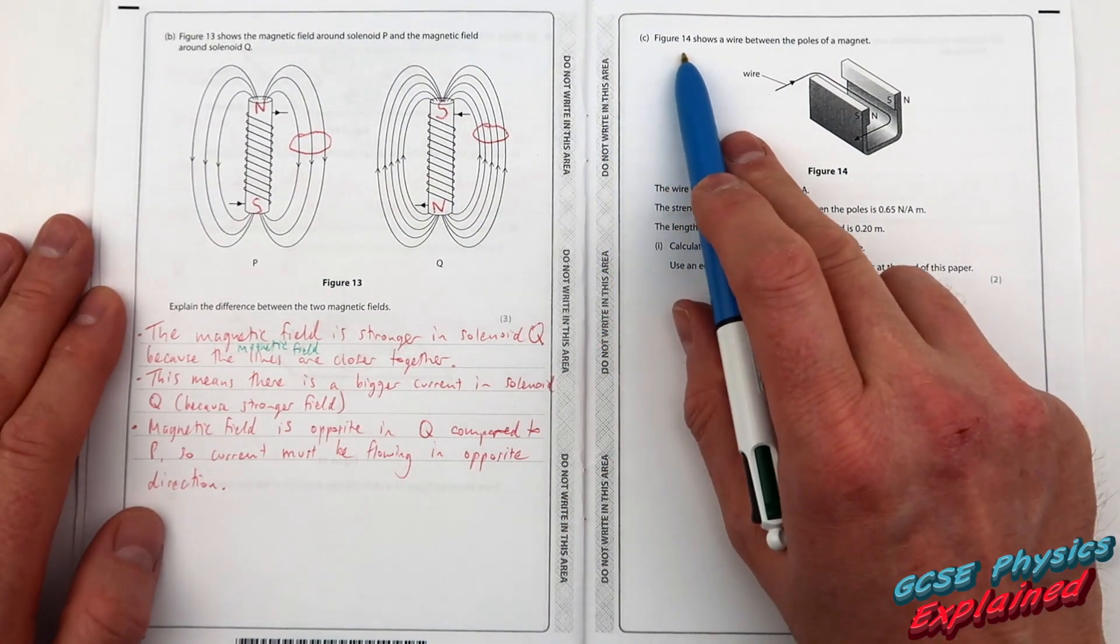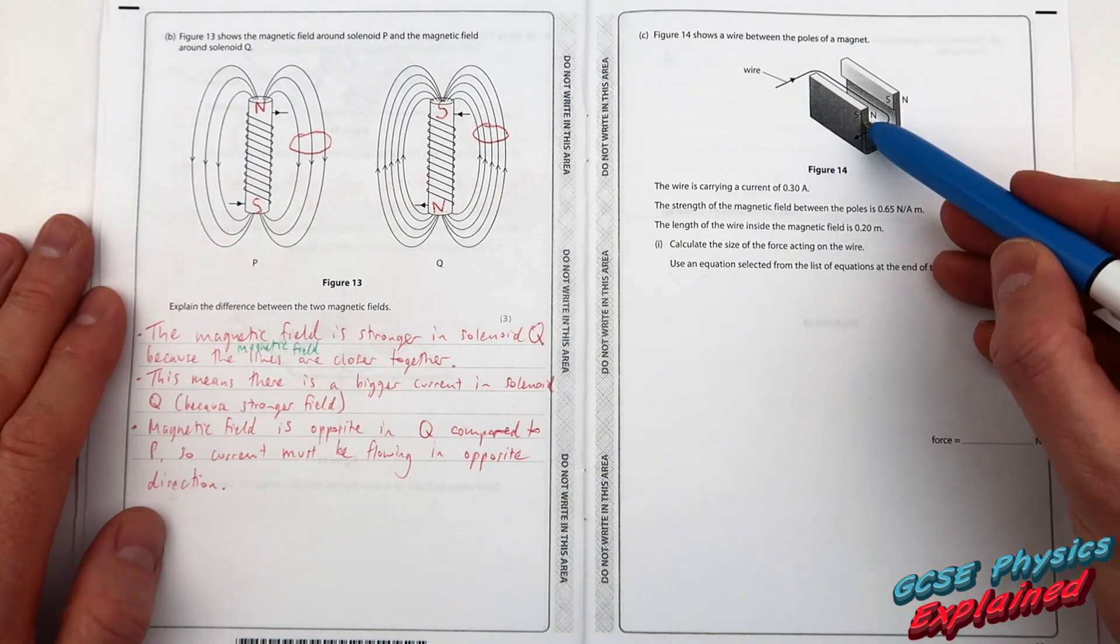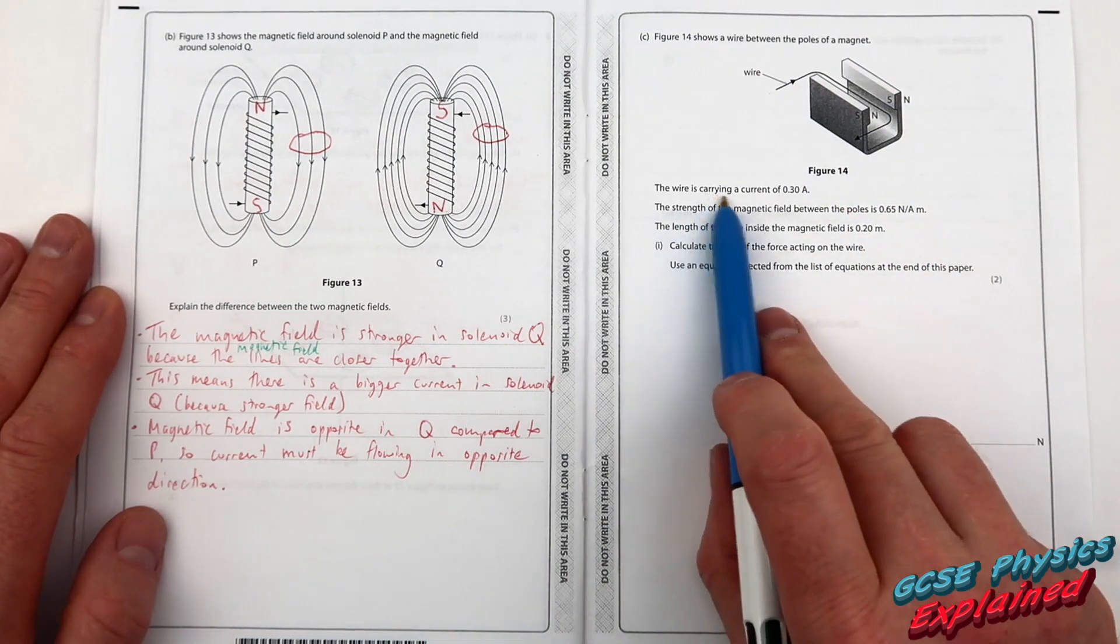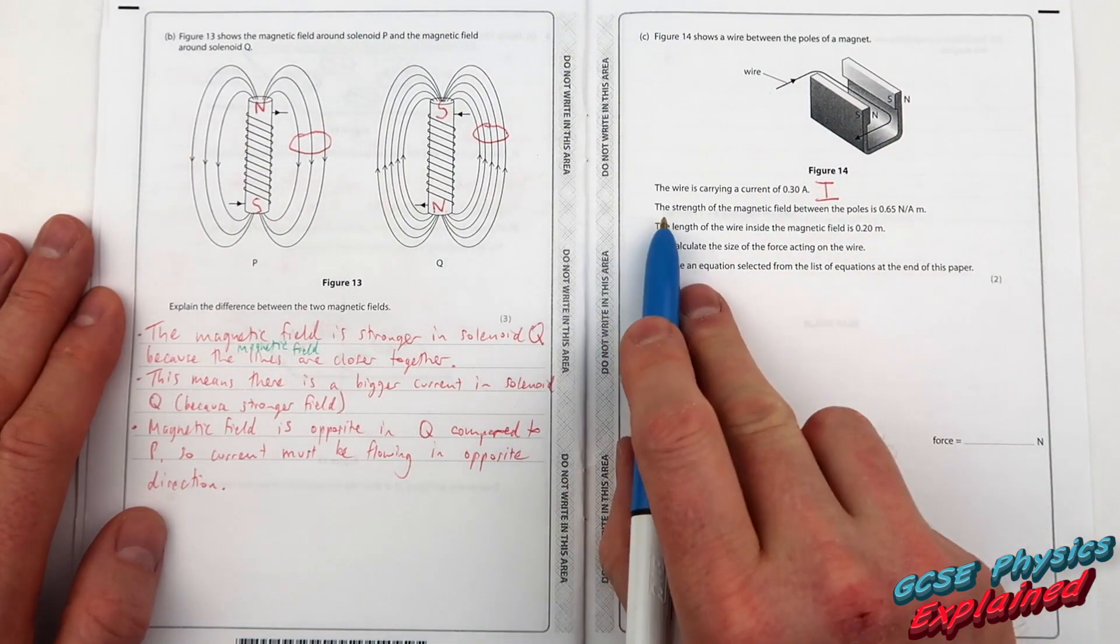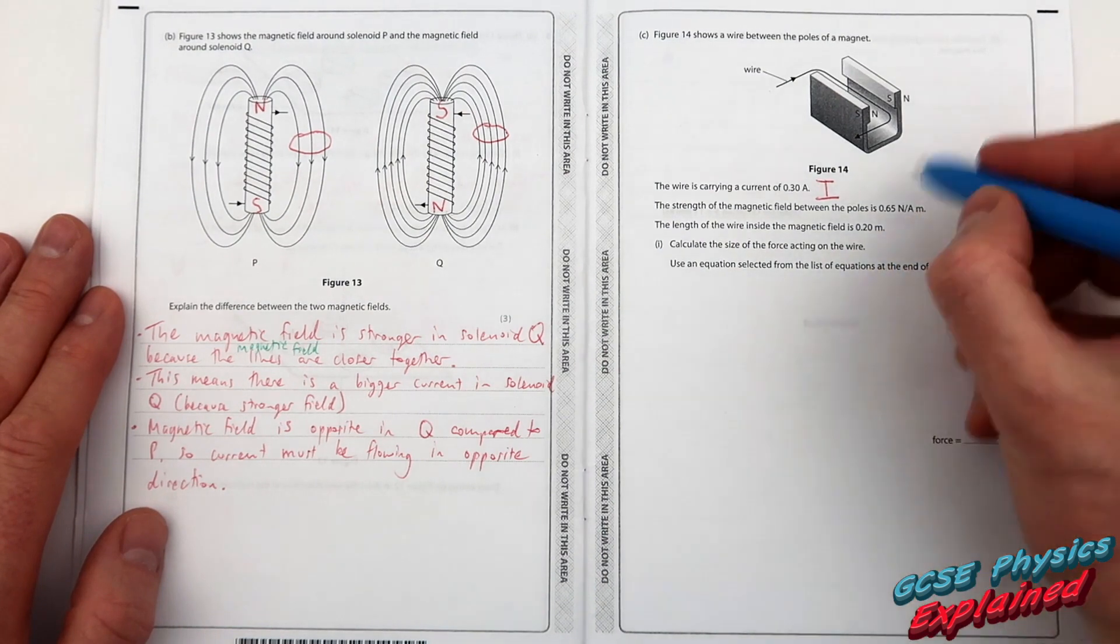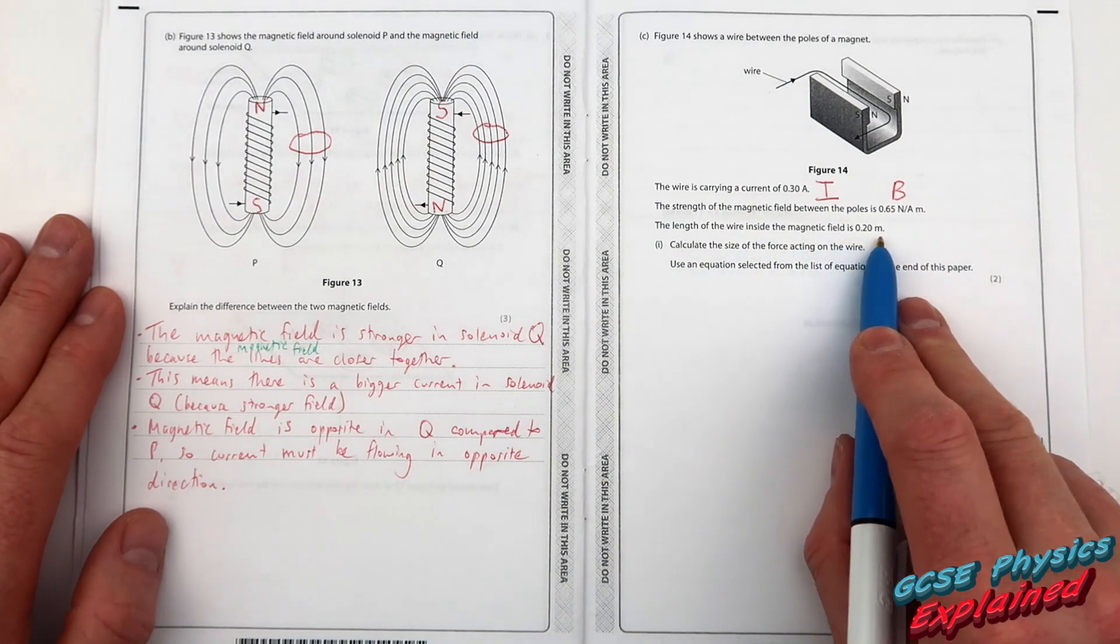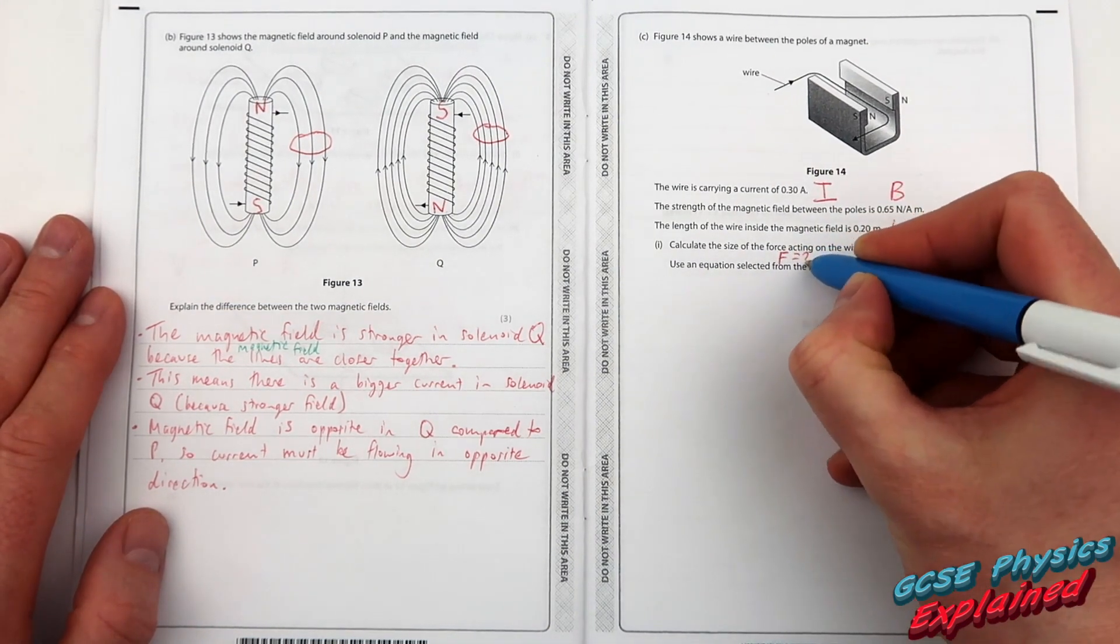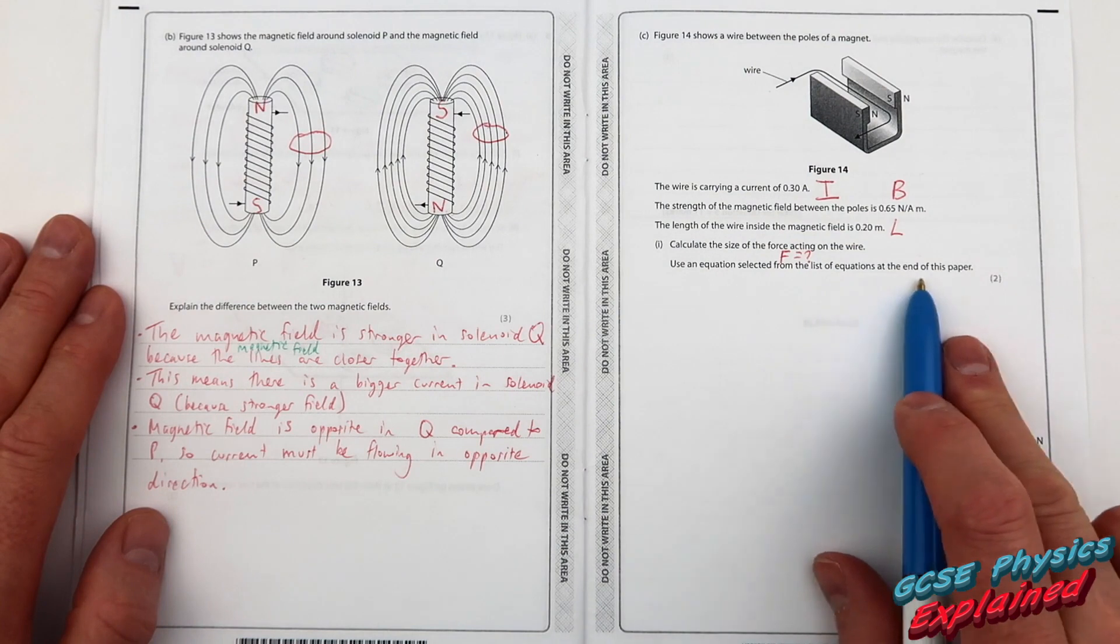Question C Figure 14 shows a wire between the poles of a magnet. There's the wire poles of a magnet so south-north south-north so that north and that south that wire is going between them. The wire is carrying a current of 0.3 amps. The strength of the magnetic field between the poles is 0.65 newtons per amp meter that's B. Magnetic field strength. The length of the wire inside the magnetic field is 0.2 meters that's L. Calculate the size of the force F acting on the wire. Use an equation selected from the list of equations at the end of this paper.